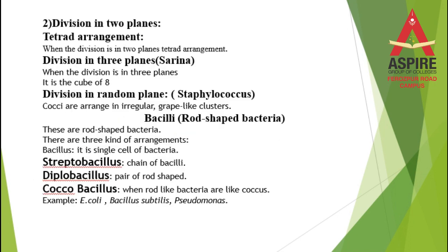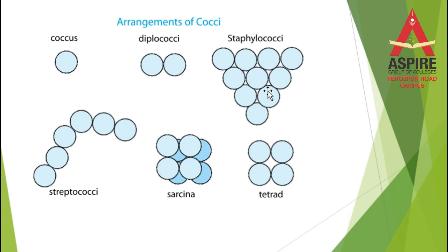The next shape is the tetrad arrangement — when four bacteria are present, two in front and two behind. There is also a three-dimensional structure where eight bacteria form a cube in three planes, known as sarcina. Additionally, bacteria can be present in irregular grape-like clusters, which is known as staphylococci or staphylococcus.